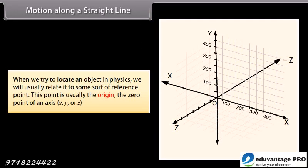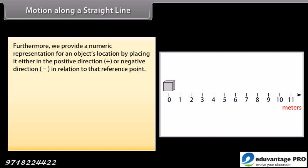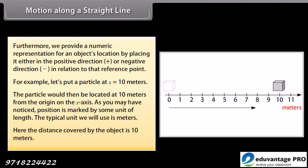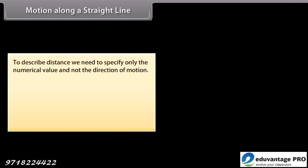When we try to locate an object in physics, we usually relate it to some sort of reference point. This point is usually the origin — the zero point of an axis X, Y, or Z. We provide a numerical representation for an object's location by placing it either in the positive direction or negative direction in relation to that reference point. For example, a particle at X = 10 meters would be located 10 meters from the origin on the X axis. Position is marked by some unit of length; the typical unit used is meters. Distance is described by the numerical value only, not the direction of motion. The numerical value of a physical quantity is its magnitude. The difference between an object's starting position and final position after it moves is known as displacement.